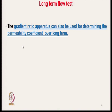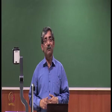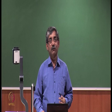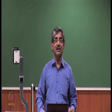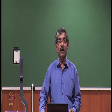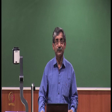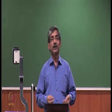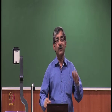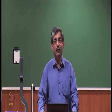The gradient ratio apparatus can also be used for determining the permeability coefficient over a long time. After stabilization, we can measure the permeability coefficient, and flow rates can be determined after establishing steady-state conditions. Initially there will be some piping and blocking of pores, but after a certain time steady-state flow will be established.